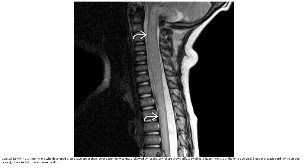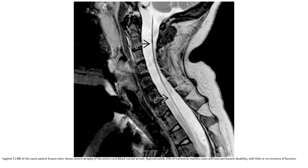This is a T2 MRI of the spine in a 14-month-old who developed progressive upper then lower extremity weakness, followed by respiratory failure. The image shows cord swelling and hyperintensity of the anterior cervical and upper thoracic cord, characteristic of transverse myelitis. A follow-up T2 MRI of the same patient eight years later shows severe atrophy of the entire cord. Approximately 25% of transverse myelitis cases result in permanent disability with little or no recovery of function.